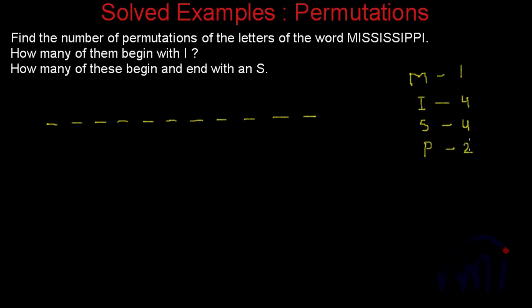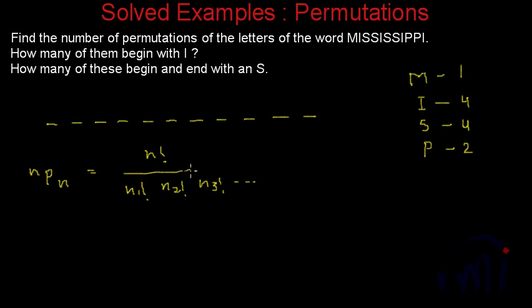So the problem is to find the number of permutations of the letters of the word Mississippi. The formula we have is: permutation of n objects for n places equals n factorial divided by n1 factorial times n2 factorial times n3 factorial, and so on. Here n1, n2, n3 are the number of repetitions of each object — in this case, each letter. So M is n1, I is n2, S is n3, and P is n4.